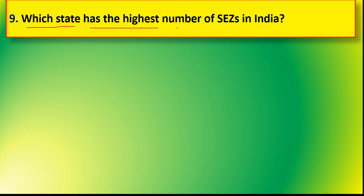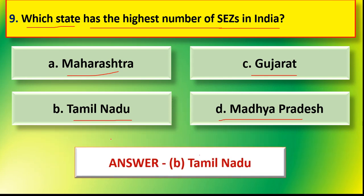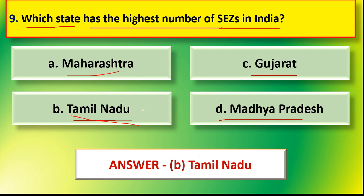Next question: which state has the largest number of special economic zones in India? Options are option A Maharashtra, option B Tamil Nadu, option C Gujarat, option D Madhya Pradesh. The correct answer is option B Tamil Nadu. Tamil Nadu state has the largest number of special economic zones.